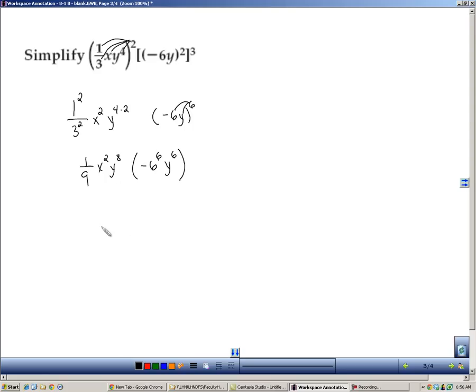Now we have to multiply these two. 1 ninth times negative 6 to the sixth. Well, that's 46,656. So if you need to use a calculator for that, that's fine. And then we have times x squared, and then we have y to the eighth times y to the sixth. Well, when you multiply bases that are the same, you add their exponents. We learned that from the very first video. Here we're going to cancel off 46,656 and 9, we'll get 5,184. Again, you probably need a calculator for that. X squared, and then adding the exponents here, y to the 14th.